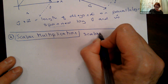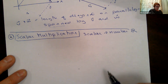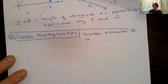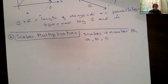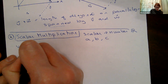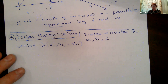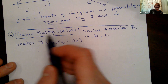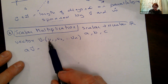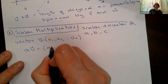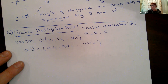A scalar is a real number — just a plain old number, referenced by a letter like A, B, or C, without an arrow over the top. If I want to multiply vector V, which has components V1, V2, and so on, by scalar A, I write it as A times V. That means I distribute the scalar to all the components, so this becomes AV1, AV2, AVn, and so on.